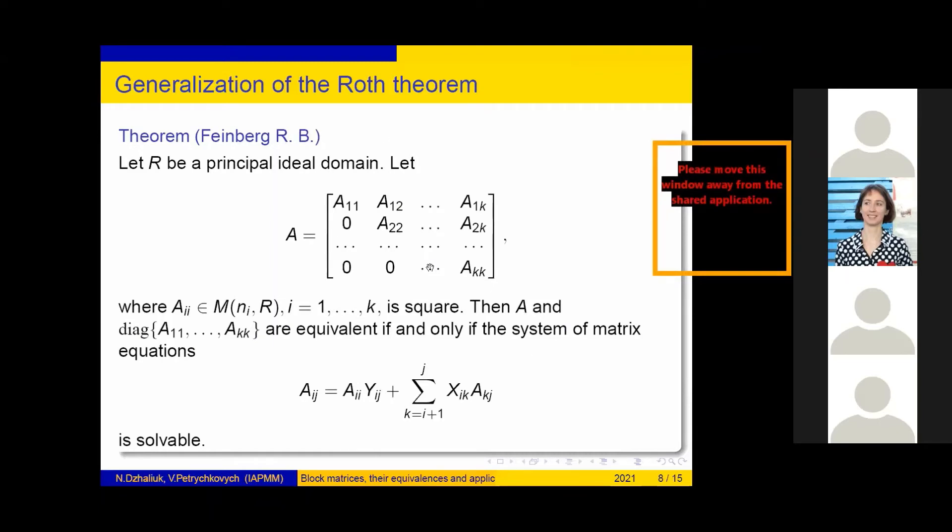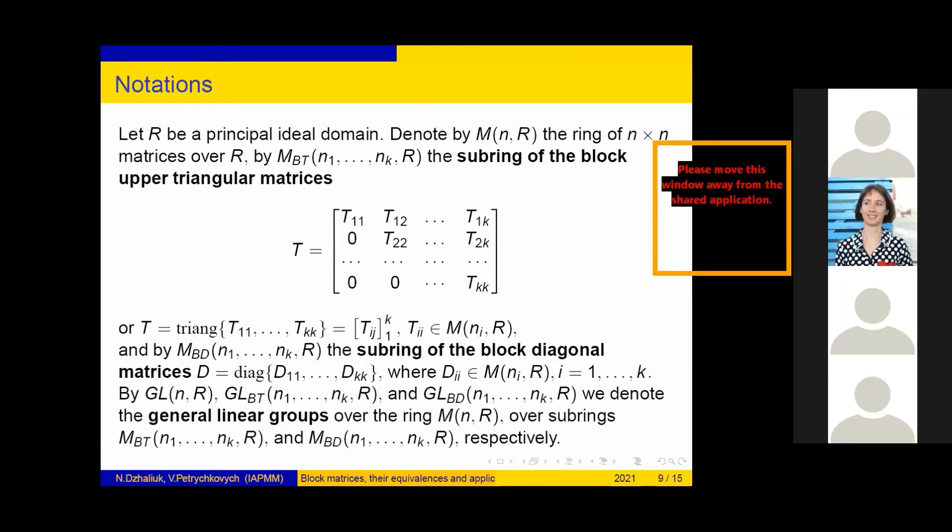We introduce the next notation. Let R be a principal ideal domain. Denote by M_n(R) the ring of n×n matrices over R. By M_BT(n_1,...,n_k,R) the subring of the block upper triangular matrices T.